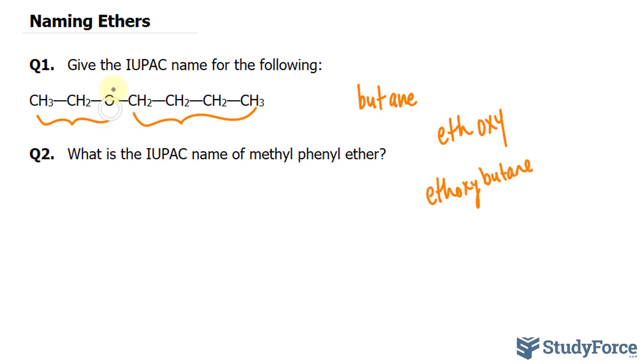Given that this carbon is the nearest to this oxygen, we write down C1, C2, C3, C4. So the oxygen exists at one ethoxybutane. That's the answer to question number one.